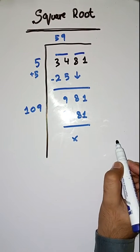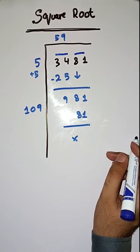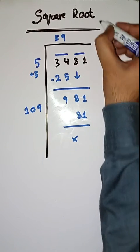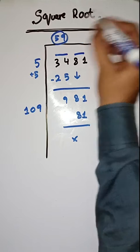So this completely solves it. So square root of 3481 is equal to 59.